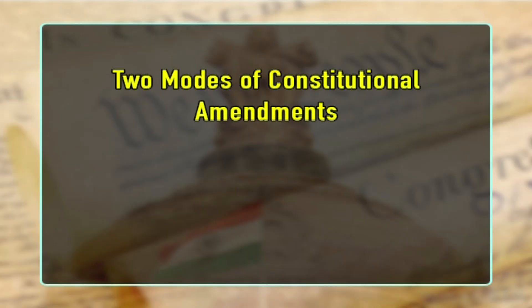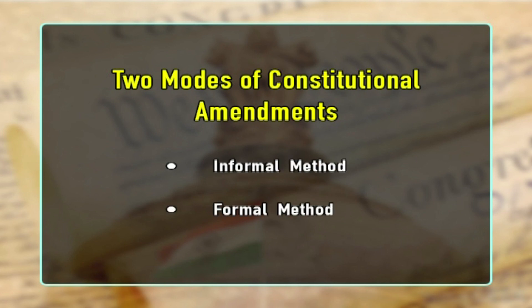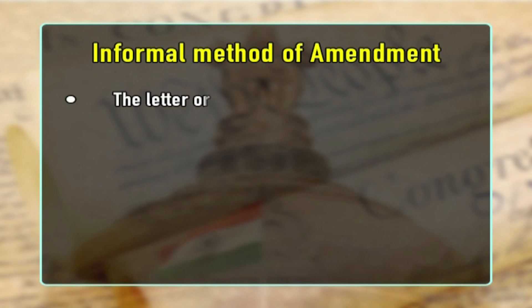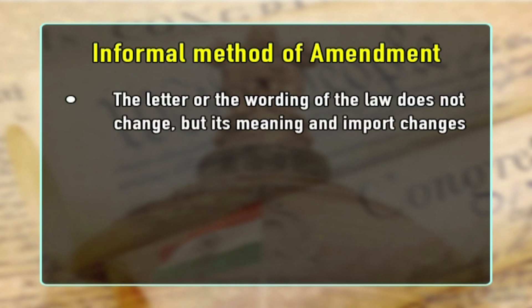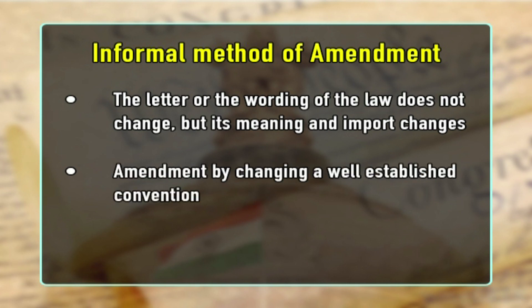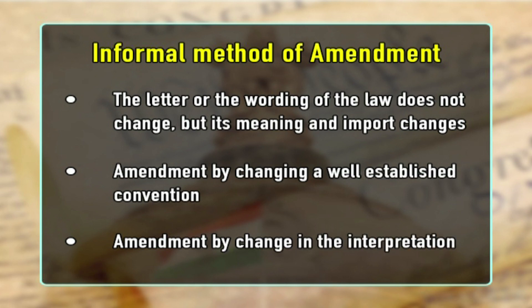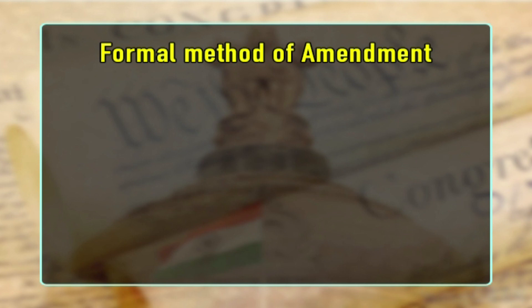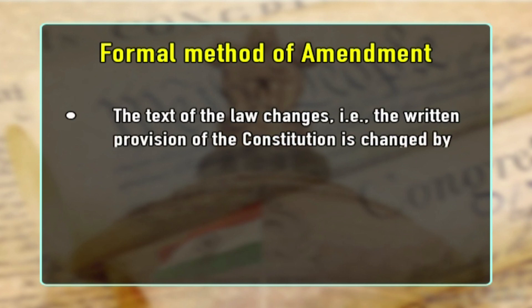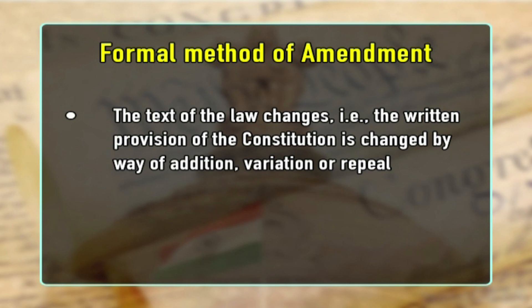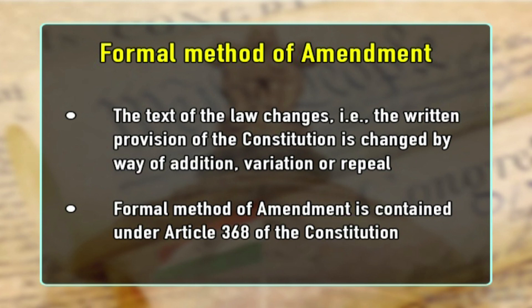Broadly speaking, there are two modes of amending the constitution: the informal method and the formal method. Under the informal method of amendment, the letter or wording of the law does not change, but its meaning and importance do. This method includes amendment by changing a well-established convention and amendment by changing the interpretation of the constitution. Under the formal method of amendment, the text of the law changes — that is, the written provision of the constitution is changed by way of addition, variation or repeal. The formal method of amendment is contained under Article 368 of the constitution.